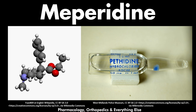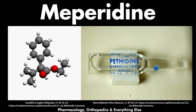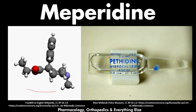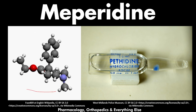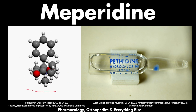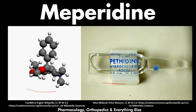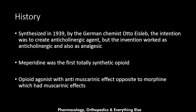We will explain the pharmacology of this medication. Regarding the pictures, the first one shows the chemical structure of meperidine. The black spheres represent carbon atoms, the white spheres are hydrogen atoms, the red spheres are oxygen atoms, and the blue spheres are nitrogen atoms. The right picture shows how the ampoule of meperidine looks.